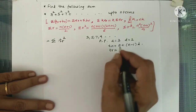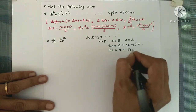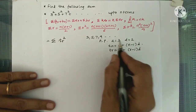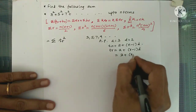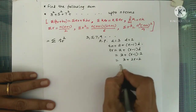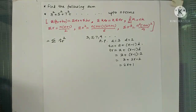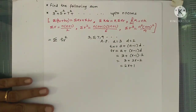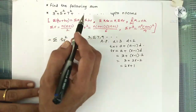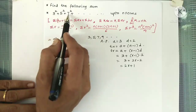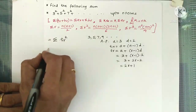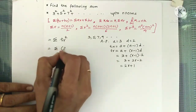The nth term of an AP is a plus (n−1)d. Replacing n by r gives the rth term: 3 plus (r−1) times 2, which equals 2r+1. So the rth term of our sequence is (2r+1), and our series becomes summation of (2r+1) square.